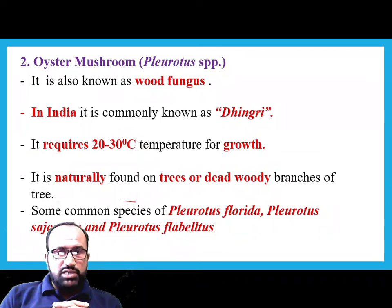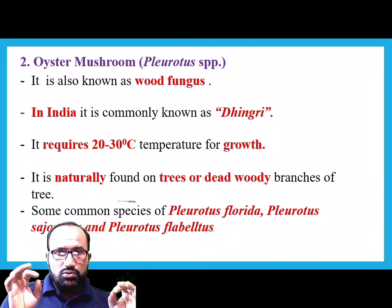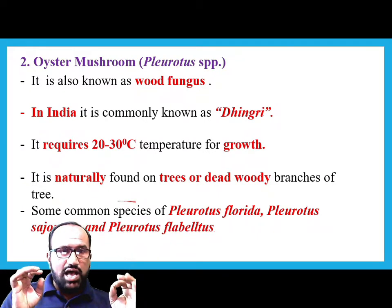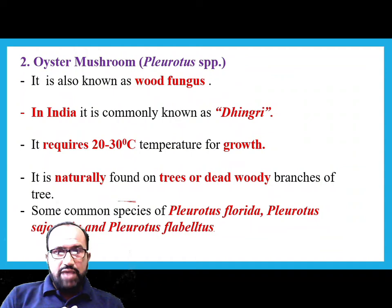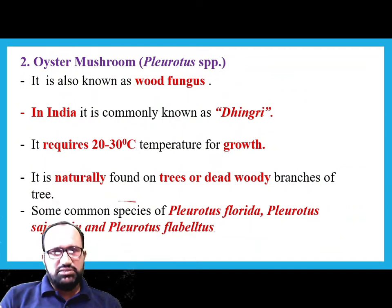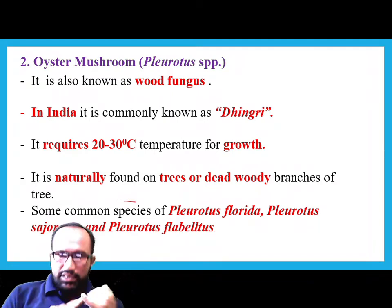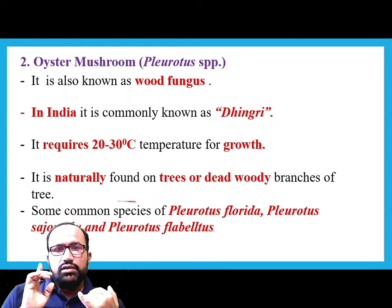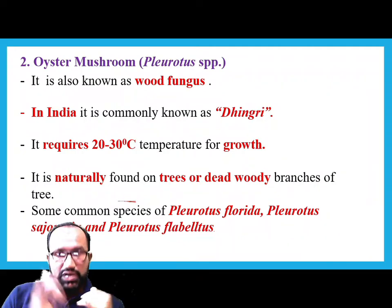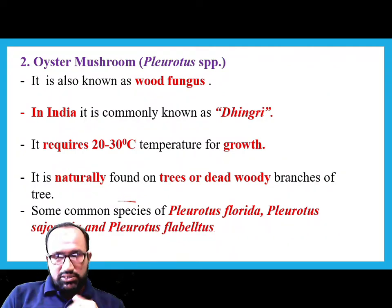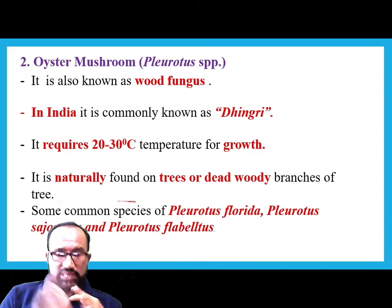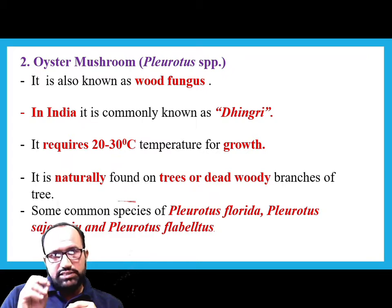Some common species of Pleurotus: Pleurotus florida, Pleurotus sajor-caju, and Pleurotus species sajor-caju — also called Hala Dhingri. It is naturally found on trees or dead woody branches of trees. It also grows on woody material, which is why it is called woody fungus. Temperature requirement is 20 to 30 degrees Celsius.